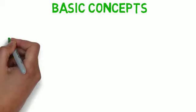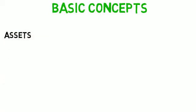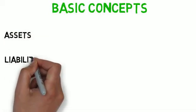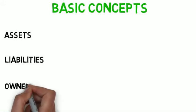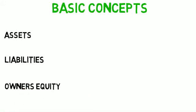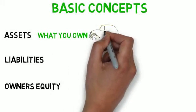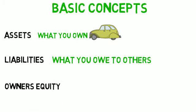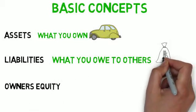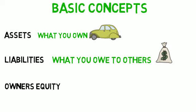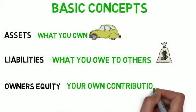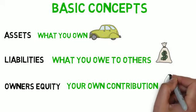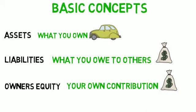Let's start by setting some basic accounting concepts. We need to know what is meant by assets, liabilities, and owners equity. Assets is what you own, like owning a car, a house, or cash. Liabilities is what you owe to others as a result of borrowing money from them. And owners equity is your own contribution to the business from your own money, without borrowing it from anyone else.